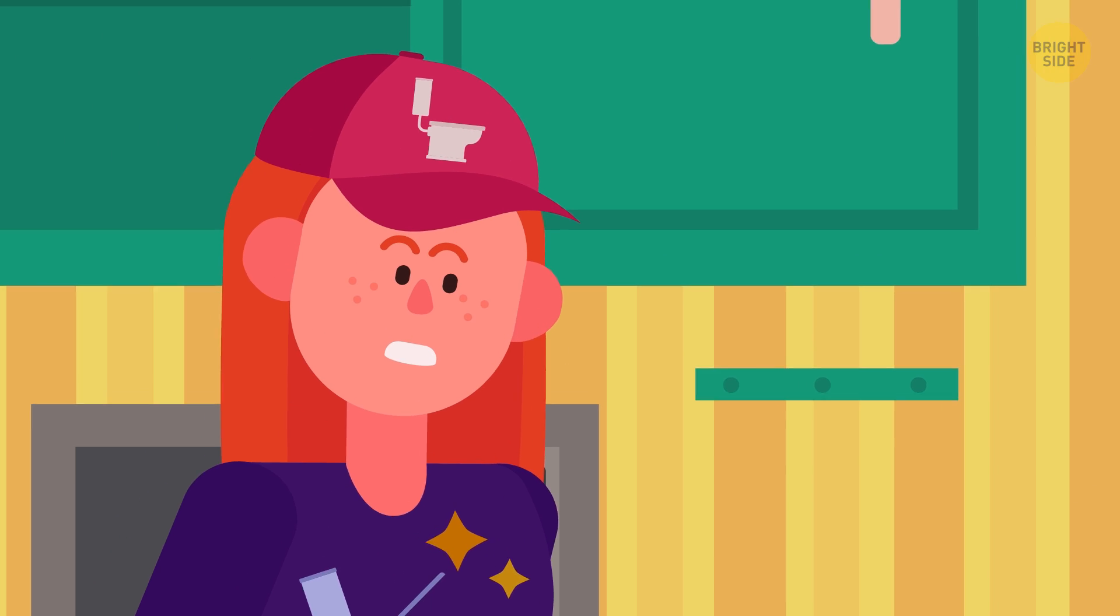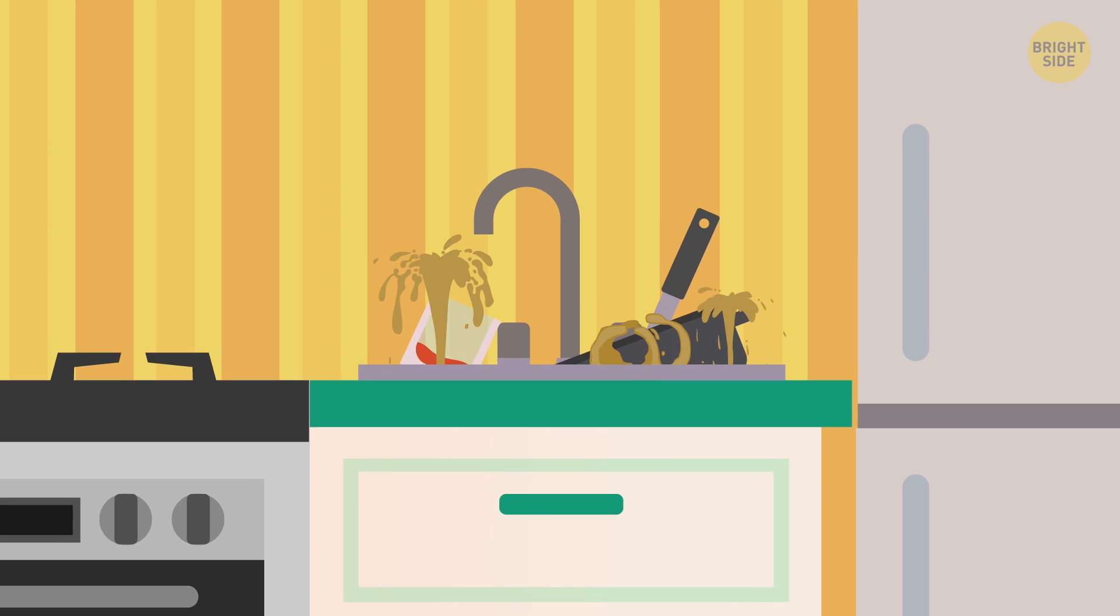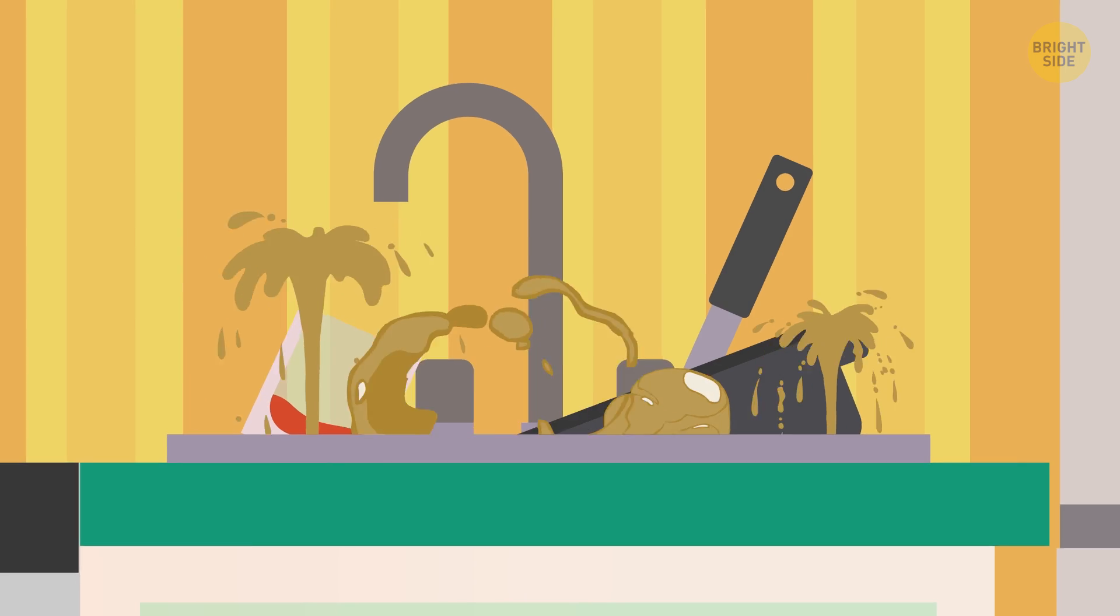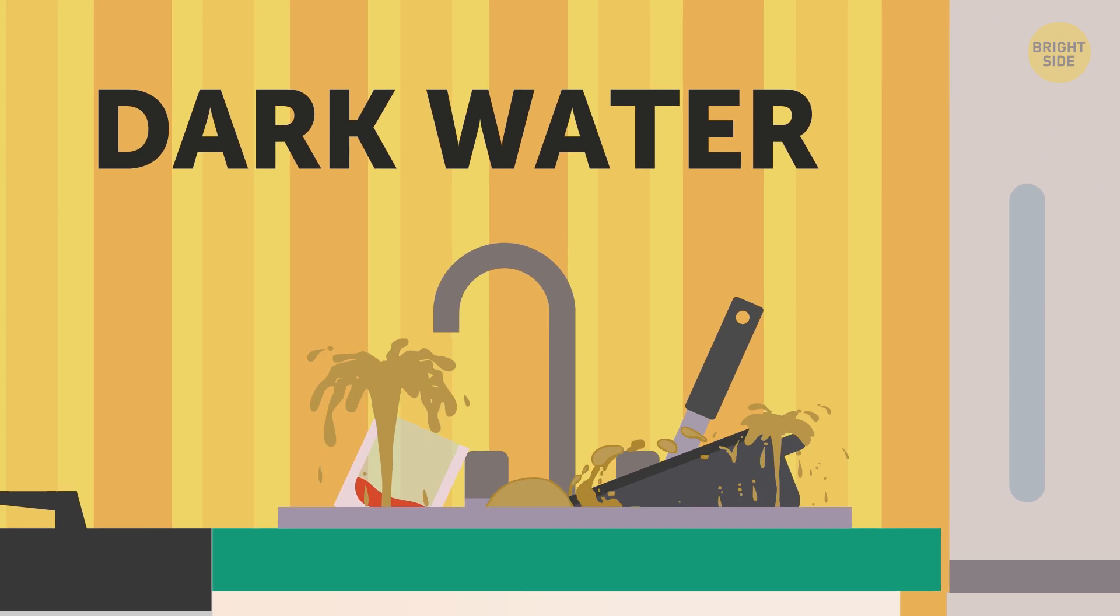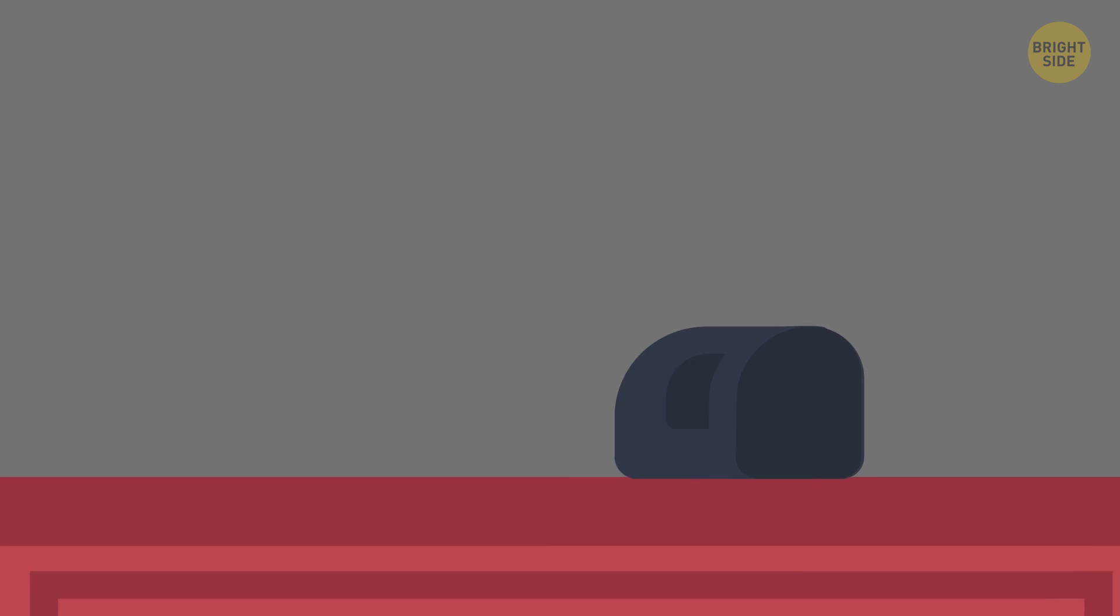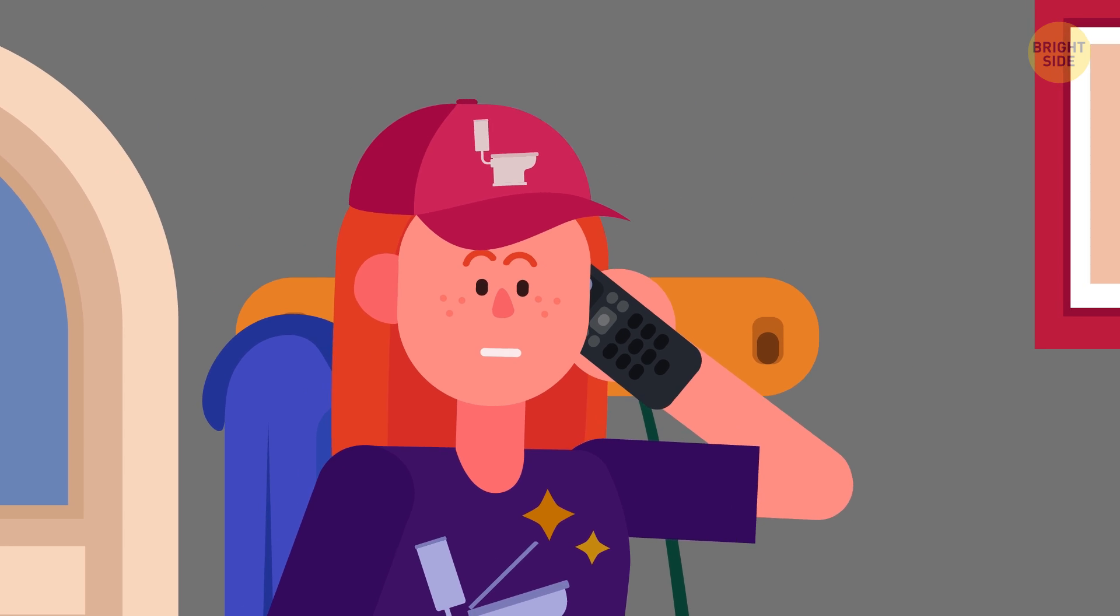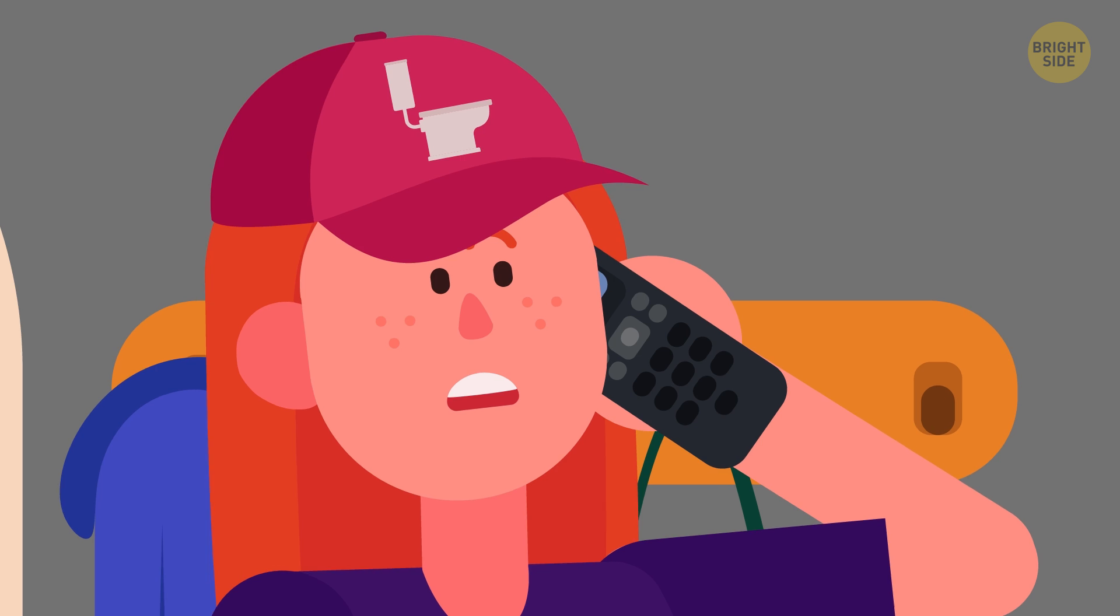You run into the kitchen, awaiting a disaster, and you're right – all the dishes you left for washing later are already half-covered in the, let's call it dark water. You call the local plumber, but the line is busy. Everyone is apparently having the same problem as you.